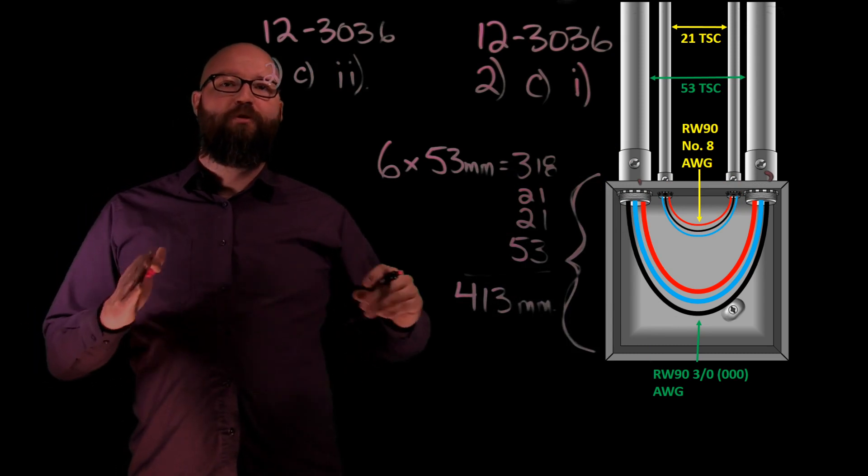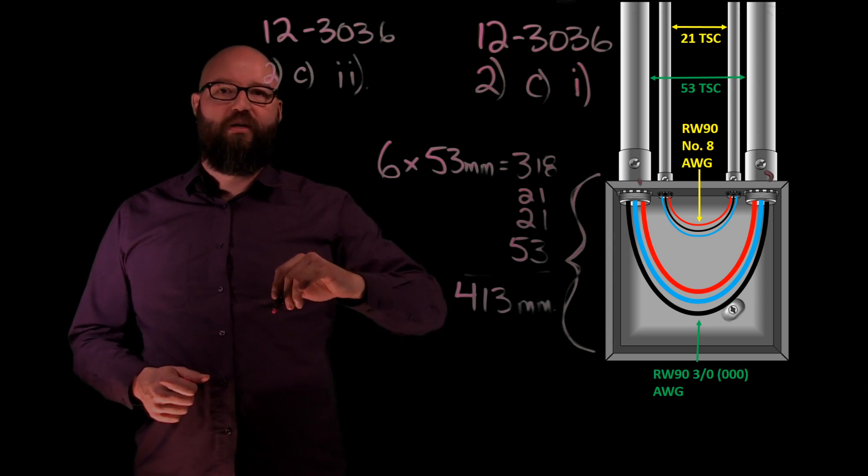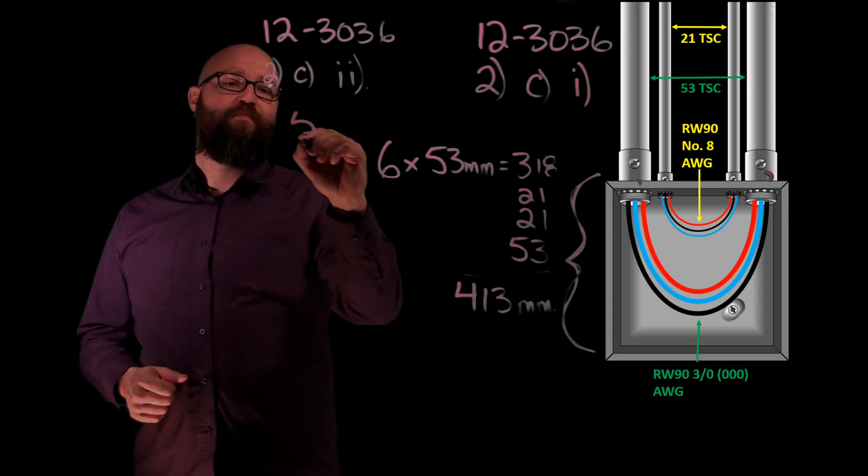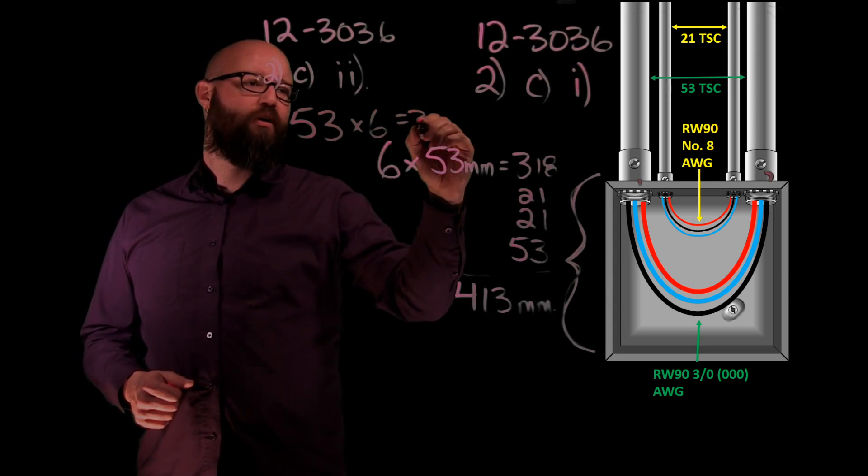I'm going to make sure that the distance between the inside, the innermost point of those conduits, is at least six times the largest trade size. So in that case we have 53 times six, again equals that's 318 millimeters.